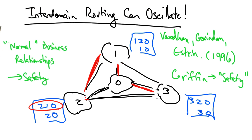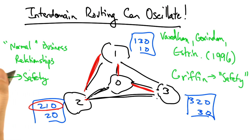It turns out that if ASs follow the ranking and export rules that we discussed, safety is guaranteed. But there are various times when those rules are violated. Business relationships, such as regional peering and paid peering, can occasionally cause those conditions to be violated. So as it turns out to this day, BGP is not guaranteed to be stable in practice, and many common practices result in the potential for this type of oscillation to occur.